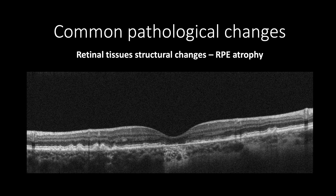Geographic atrophy is presented with RPE atrophy on OCT. This case shows prominent Bruch's membrane, absence of the RPE layer, and increased reflectivity of the underlying choroid due to the absence of RPE to reflect the light. OCT can accurately measure and locate geographic atrophy, which is very important to classify and monitor age-related macular degeneration.